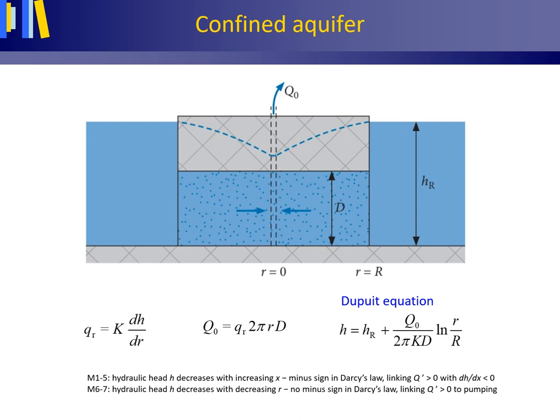The Dupuis equation holds from the outside radius of the pumping well to the radius of influence of the pumped well, large R. The volume flux or discharge Q0 from a pumping well is positive, whereas Q0 for a recharge or injection well should be taken as negative.